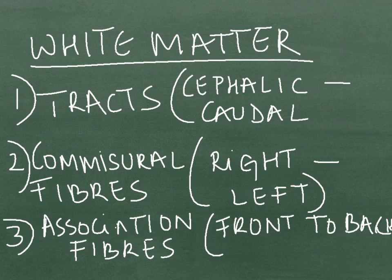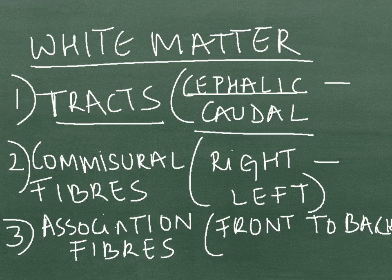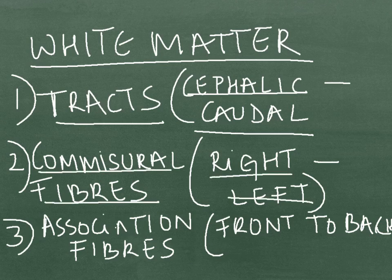There are three types of white matter. First is the tracts, which have a cephalic to chordal connection — for example, the ascending and descending tracts. Second is the commissural fibers, which have a major role in right and left connection — for example, the corpus callosum. Third is the association fibers, which have a front to back connection — for example, the association fibers of the cerebrum.